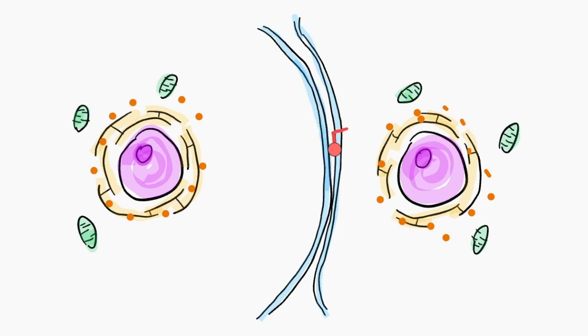Adhesion junctions are one, and it basically does just that. It connects one cell to another adjacent cell. Here, the cytoskeletons between the two cells are actually connected.